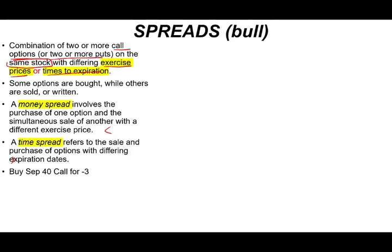So let's take a look at this. Let's assume we're going to buy a September 40 call for $3. The reason I put negative 3 to kind of remind you I'm paying $3 for that option. And it's September and the strike price is $40.